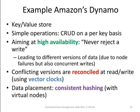A prominent example of a key-value store is Amazon's Dynamo, which has also been re-implemented as open source. Dynamo has very simple CRUD operations — create, update, retrieve, and delete — on a per-key basis. The aim is to have high availability: you should never reject a write. This can lead to different versions of the data due to node failures or concurrent writes, particularly conflicting versions where you cannot simply say one is old and the other is new.